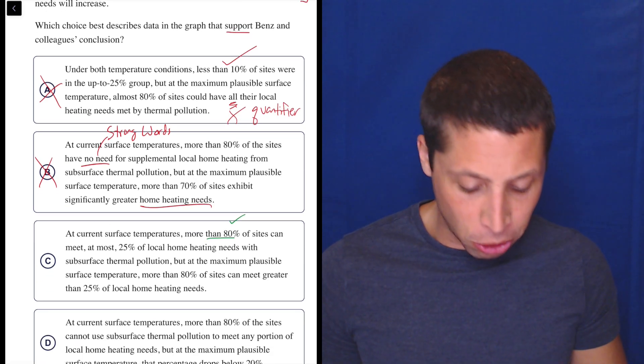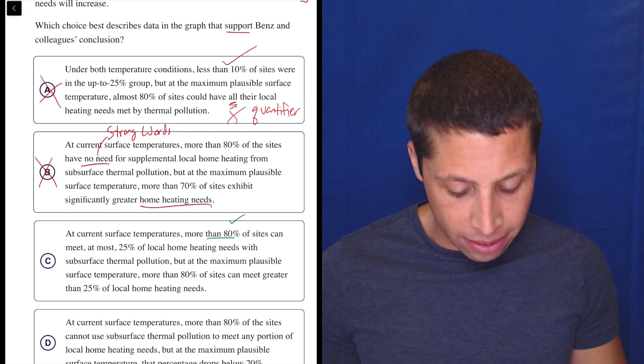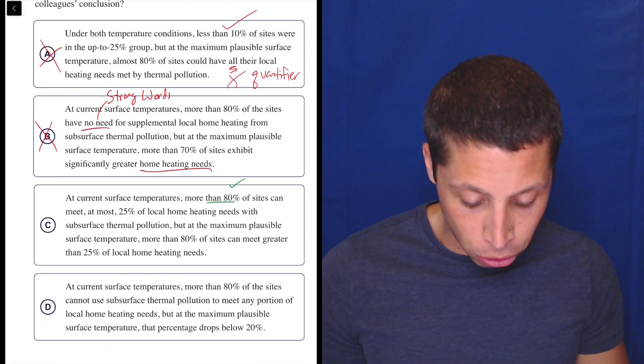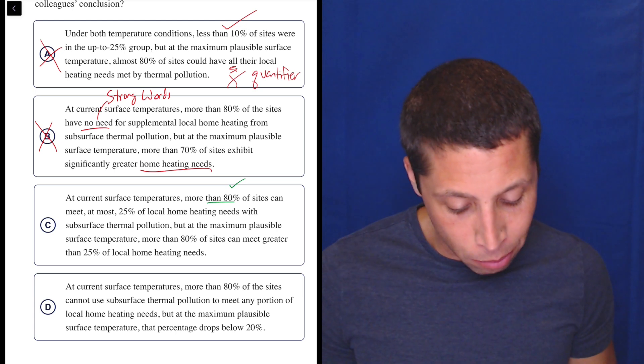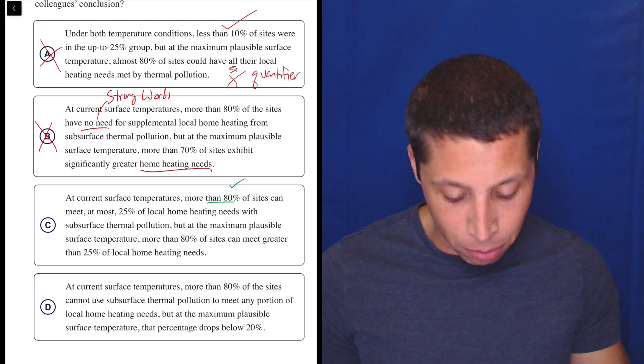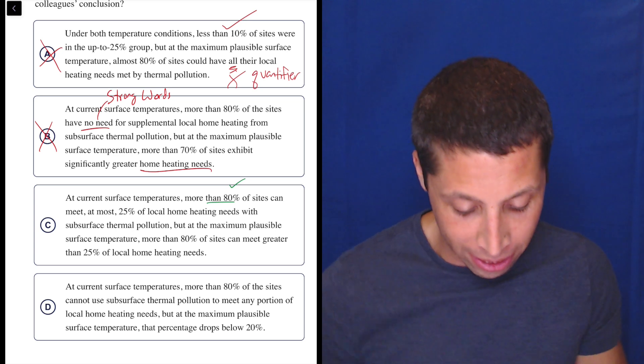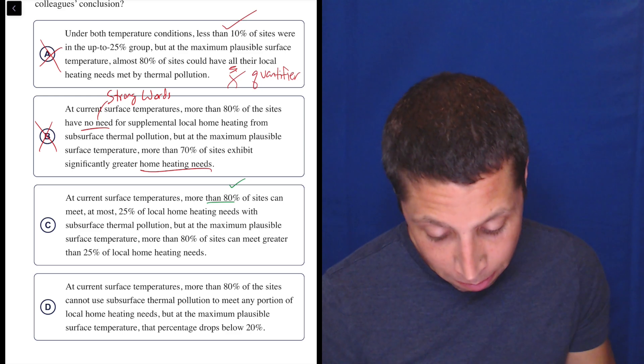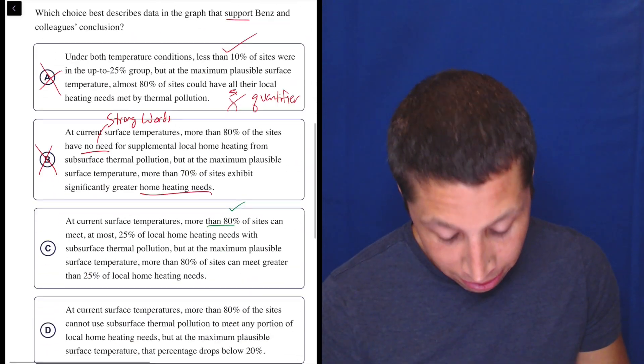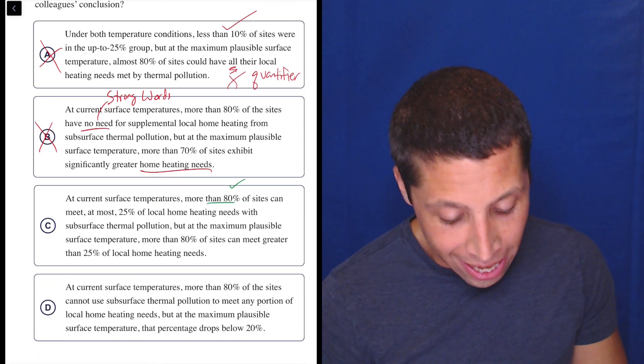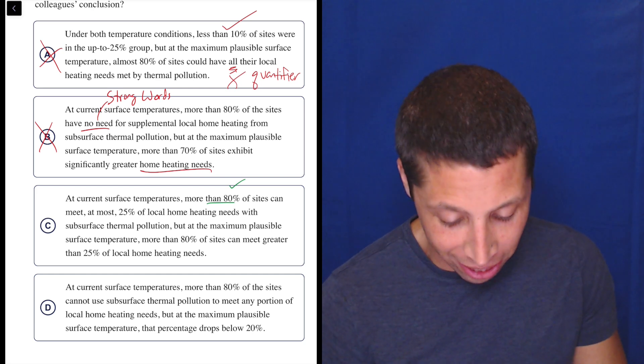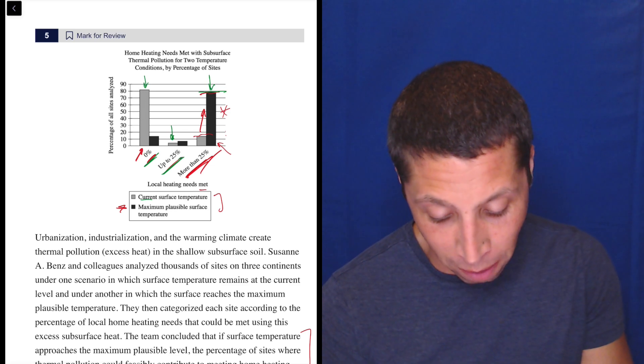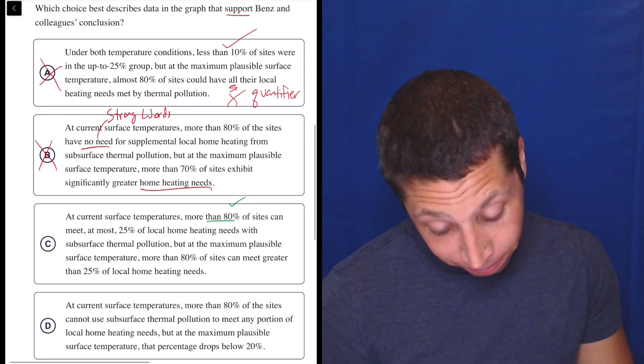That seems true then. Yes, because we're adding the two gray bars, here and here and seems good. So that seems okay. But at the maximum plausible surface temperature, more than 80% of sites can meet greater than 25% of local home heating needs. But at the maximum plausible surface temperature, more than 80% of sites can meet greater than 25% of local home heating needs. That seems right. More than 80% of sites that seems to be right here can meet more than 25%. So seems good.